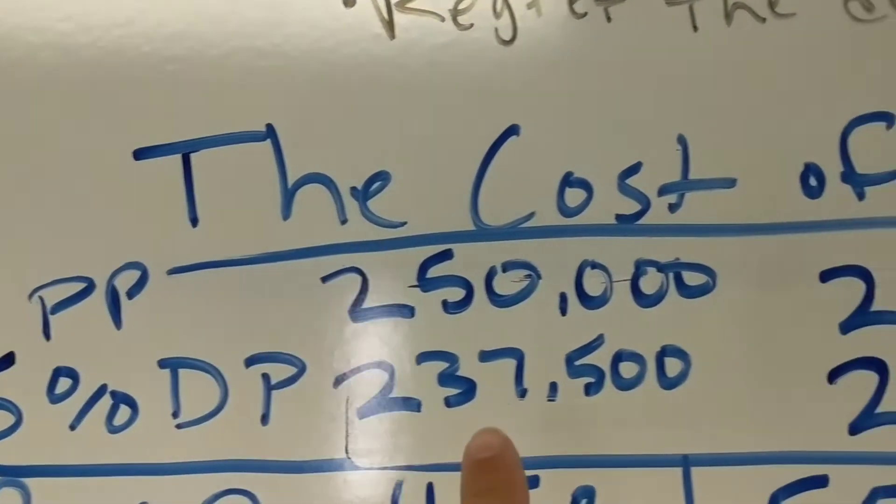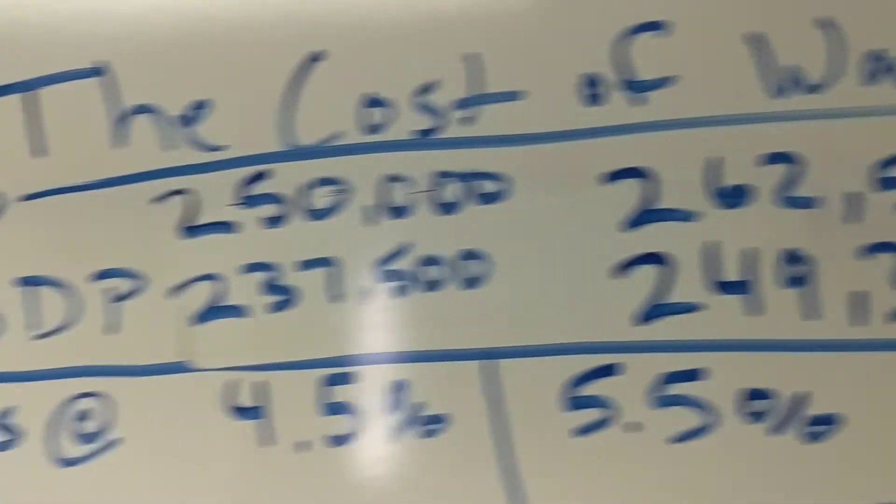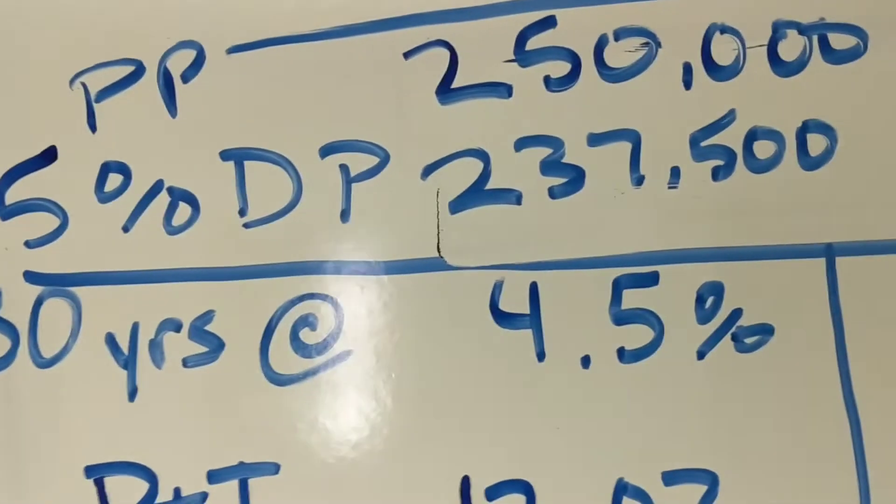Based on the same 5% down payment, you'd be financing $237,000 versus $249,000, assuming the interest rate goes up one point.